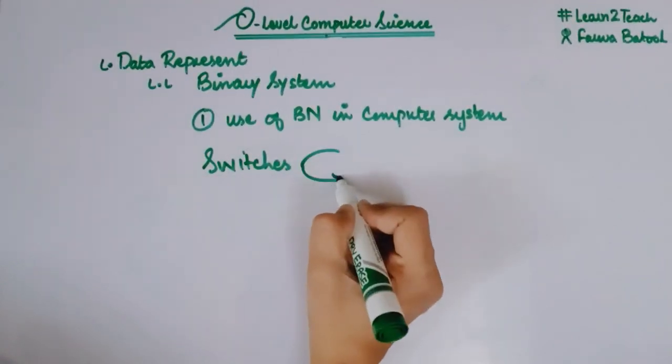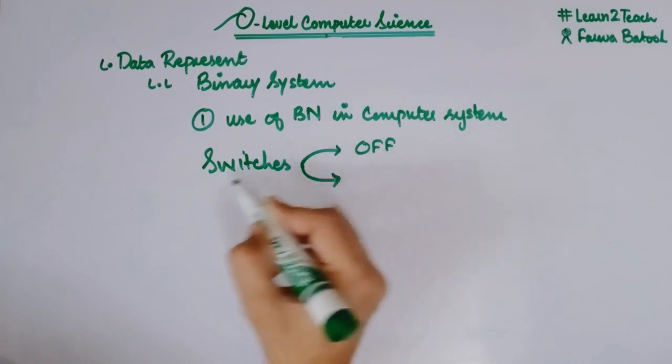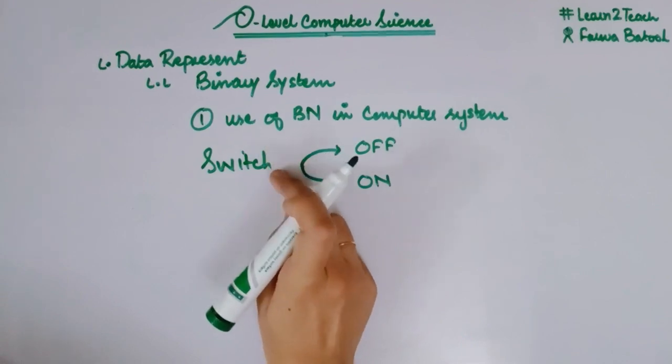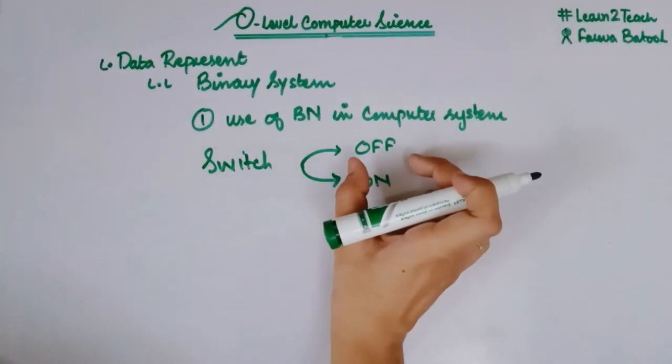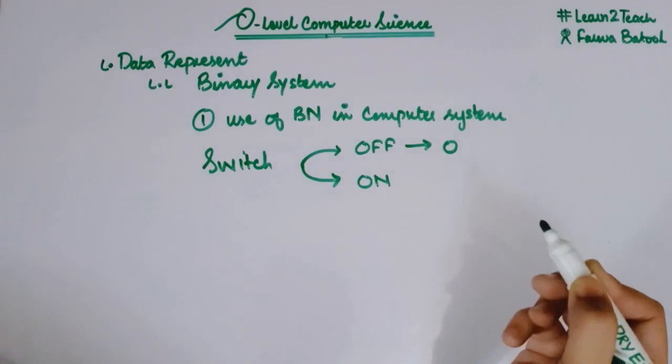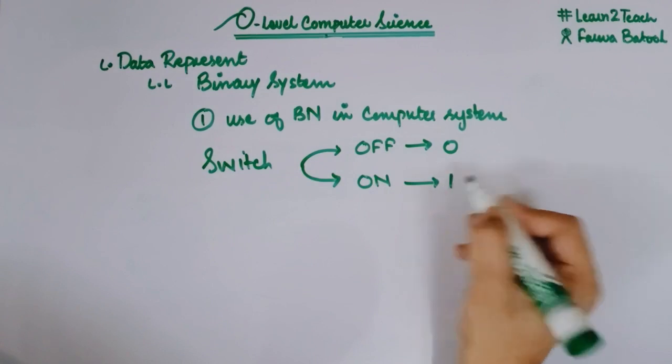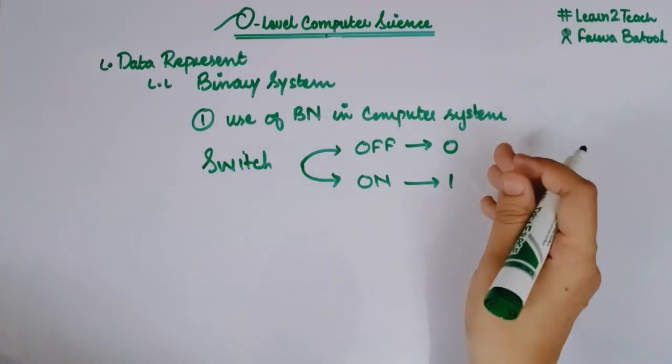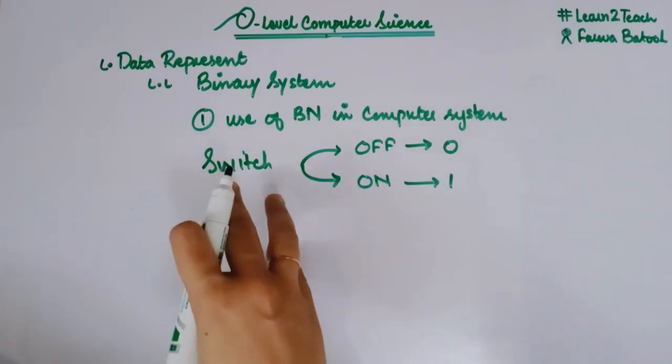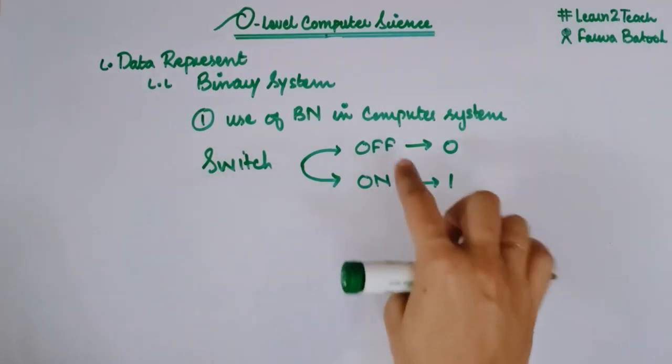Either a switch is off or it can be on. These are basically the two signals that a switch can give to a computer machine. If a switch is off, then in a binary system it can be represented as zero. If a switch is on, then in a binary system it can be represented as one. In a computer system, it can be stored or transmitted as zero or one depending on the type of signal a switch transmits.